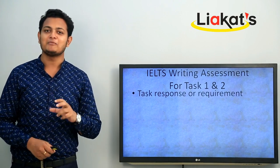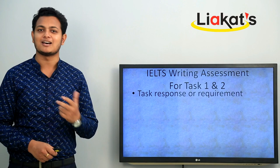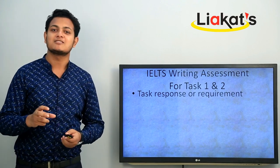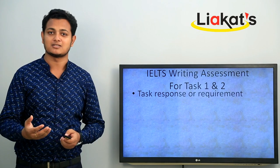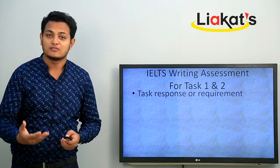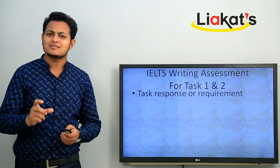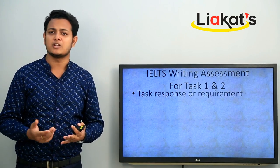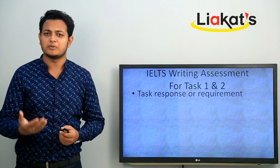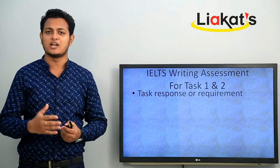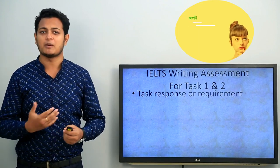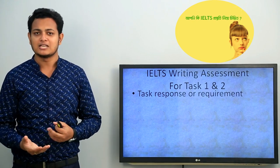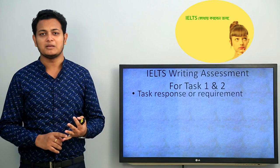At the very beginning the examiner will check your task response and task requirement — whether you have understood the task or not. For Task 1, a report could be different kinds: pie chart, bar graph, line graph, process map. That's what you have to write about for Academic Task 1.